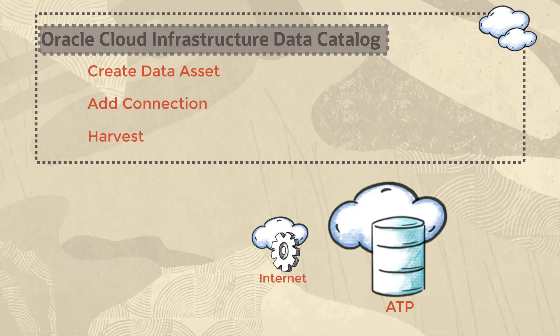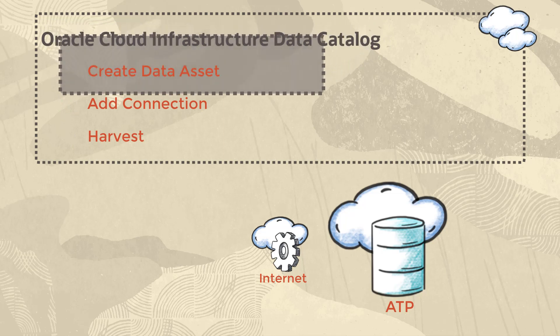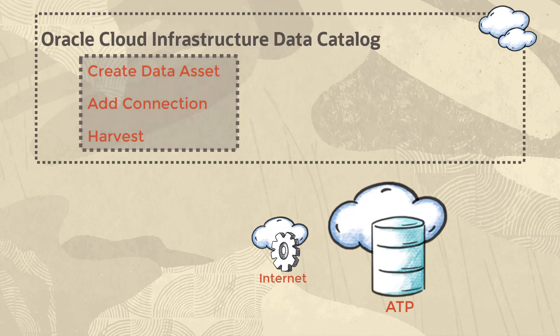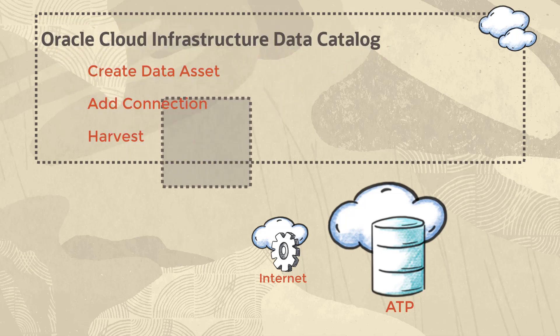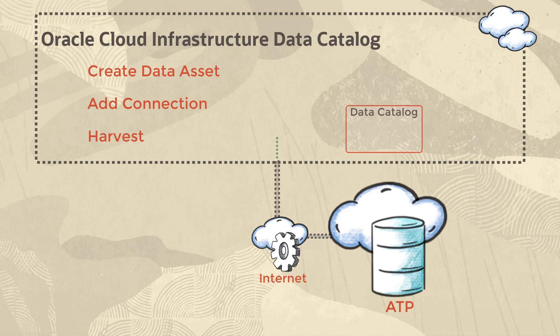Data Catalog uses the information provided to establish a connection to the autonomous transaction processing database and harvest the selected data entities.